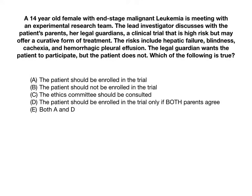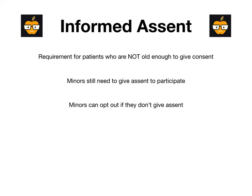The correct answer is B — the patient should not be enrolled in the trial. Even though the parents, who are the legal guardians, have given their informed consent, this question hints that the minor did not give informed assent. Even if the legal guardian gives informed consent, if the minor didn't give informed assent, the investigator cannot enroll the child in the trial. Minors can opt out if they don't give assent, regardless of what the legal guardians want.